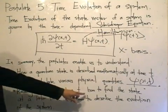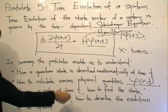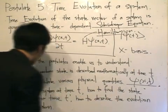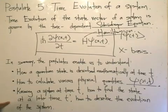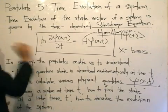And lastly, knowing the system at time t, how to find the state at a later time t' and how to describe the evolution of the system. This is what we get from the time-dependent Schrödinger equation.